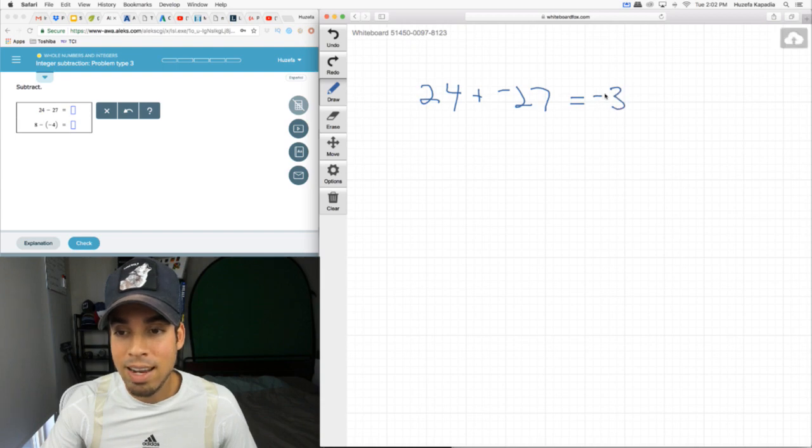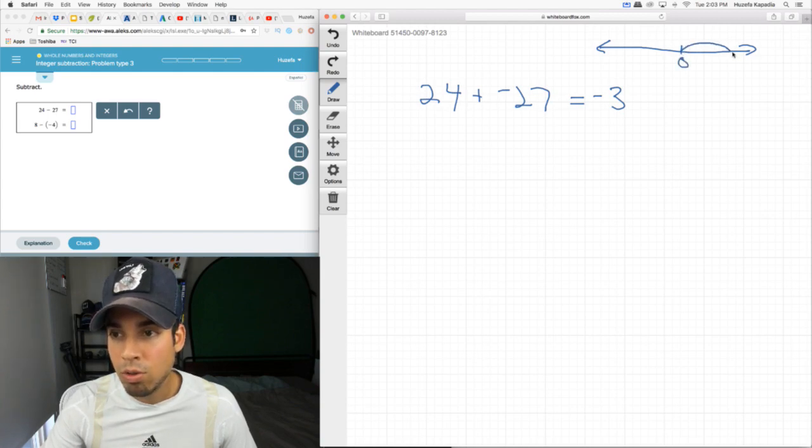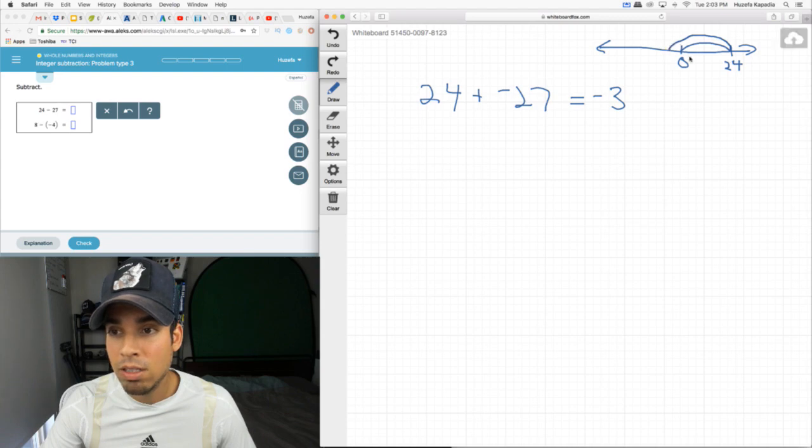Another way to think about this is if we look at a number line. Starting at 0, we're first adding 24, so we're going to the right by 24. But then we're subtracting 27, or adding a negative 27, which means we go left by 27. So we go a little bit past the zero mark because that would be a distance of 24, and we would end at negative 3. That's another way to think about how positives and negatives interact.